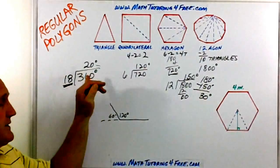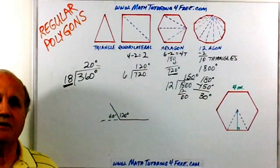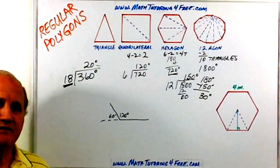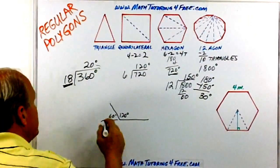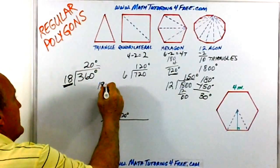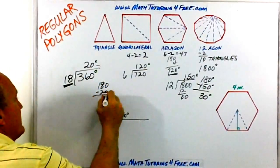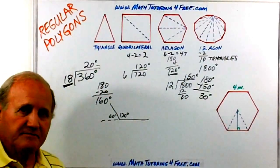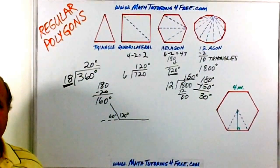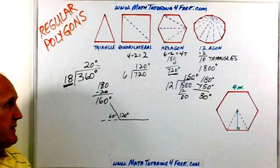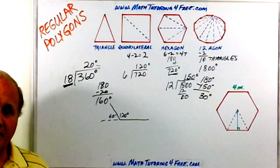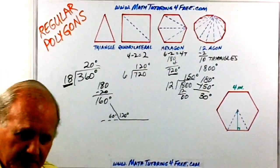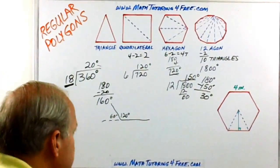If the external angle is 20 degrees, what would be the internal angle? No formula needed — it's simply the supplement: 180 minus 20, so the internal angle would be 160 degrees. The other thing we want to be able to do with regular polygons is calculate the area.